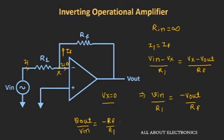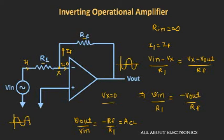This expression Vout/Vin = −RF/R1 is known as the closed-loop gain for the inverting op-amp configuration. By changing the values of RF and R1, we can control the gain of the op-amp and use it as an amplifier. The negative sign indicates that the output voltage is 180 degrees out of phase with respect to the input voltage. So if we apply a sinusoidal signal at the input, the output will be an amplified sinusoidal signal 180 degrees out of phase — which is why this is called the inverting configuration.